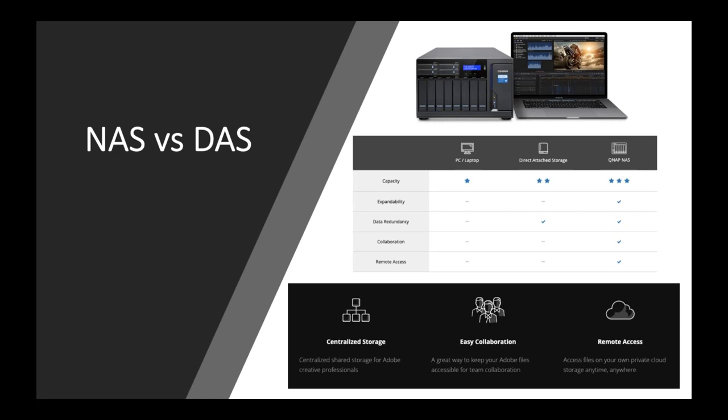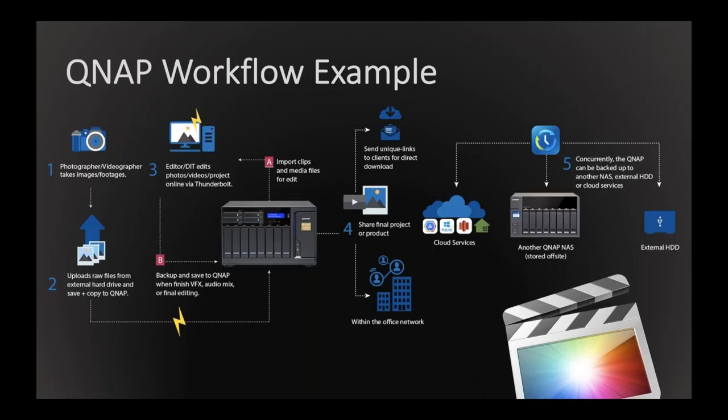NAS versus DAS: direct attach storage is great for ease of use, but as we can match the speed benefits of Thunderbolt, the added features you get with network-attached storage make it a non-argument for me. The expandability and capacity of NAS is one benefit, but really it's about the collaborative nature of centralized storage. With QNAP NAS, you can have multiple editors connected by Thunderbolt or 10GbE, whilst everyone else on the local network still has full access to all your files — backing up work without swapping physical connections. You also get remote access to download files to work on at home, or upload raw footage to a centralized location without carrying external hard drives around.